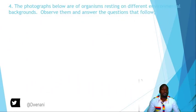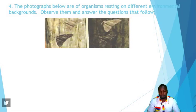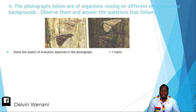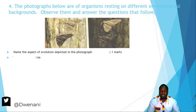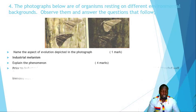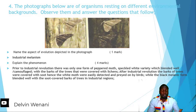The photographs below are of organisms resting on different environmental backgrounds. Observe them and answer the questions that follow. These are moths. Name the aspect of evolution depicted in the photograph. This is what we call industrial melanism. Prior to the industrial revolution, there was only one form of peppered moth, which was white, and it blended well with the white-barked environment.